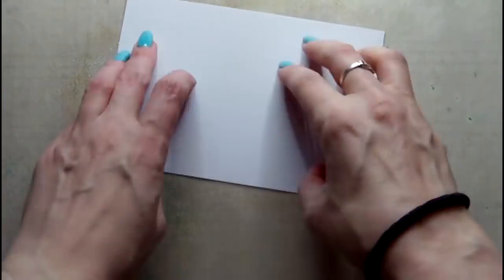I'm starting here with some distress ink in the color antique linen. I've applied this to my craft sheet, spritzed it with water, and then picked up the ink.